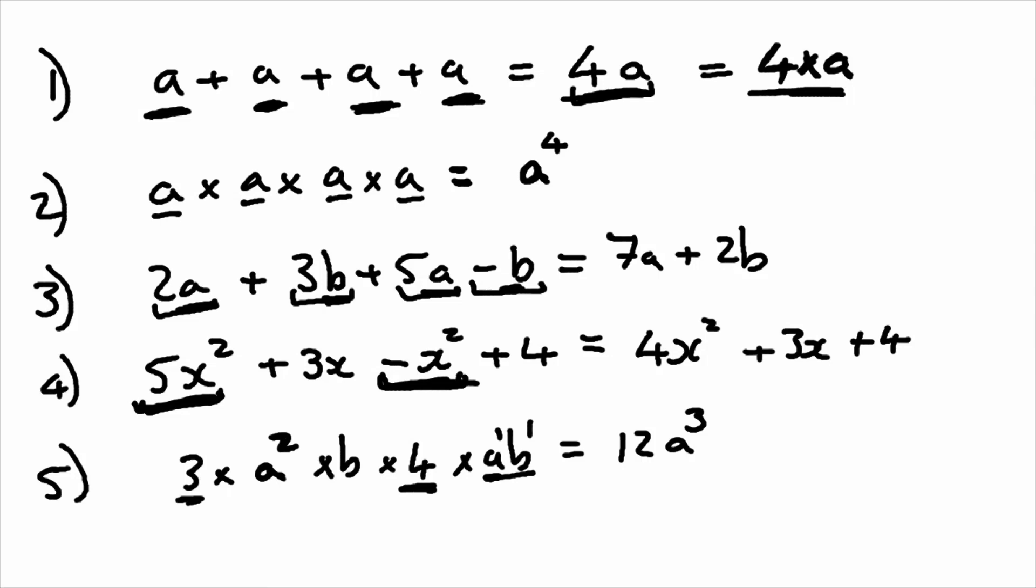A squared is A times A, so A times A times A is A to the cube. Now we've got the B terms to worry about. B times B is B squared. We can't simplify our answer any further, so we leave it like this.